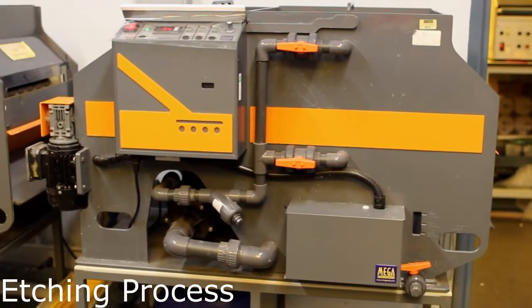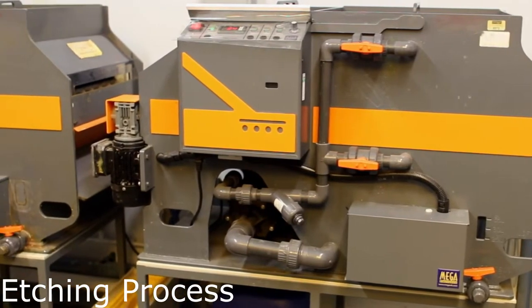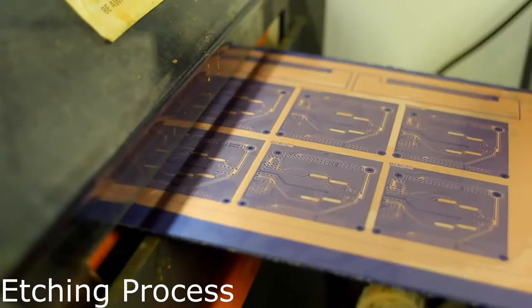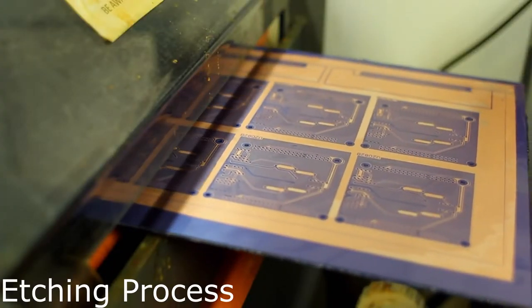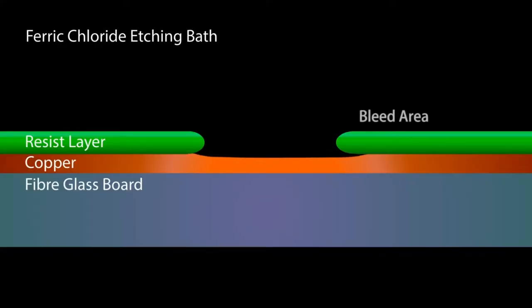The board is then put through a ferric chloride etching tank which chemically removes the copper not protected by the hardened resist film. There's the possibility of slight bleed of the acid under the protective film which can cause breaks in the tracks if they're beneath the minimum specified width.